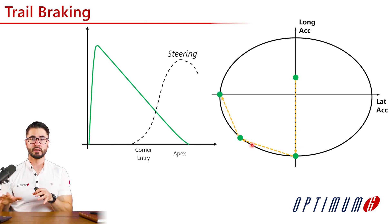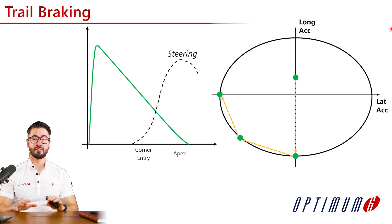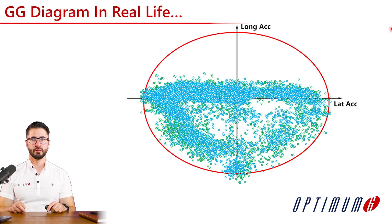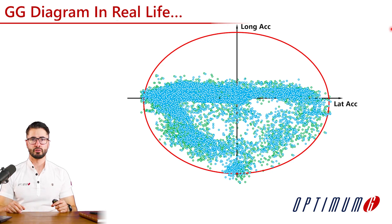This shows us that we can very easily identify if one car is trail braking more than the other. The problem is that in real life it is not that easy to be analyzing GG diagrams. Let's try to compare two GG diagrams from real data — car number one, car number two. It's very hard for us to understand the differences between the drivers. Data analysis is all about being effective and assertive, so for that we are going to start using the combined acceleration channel for this analysis.